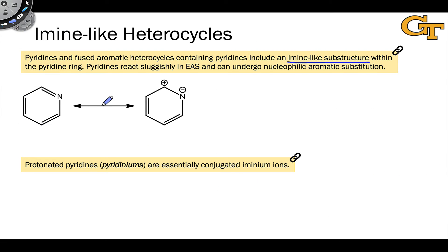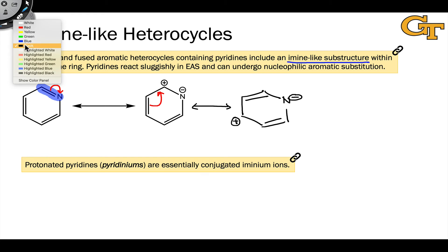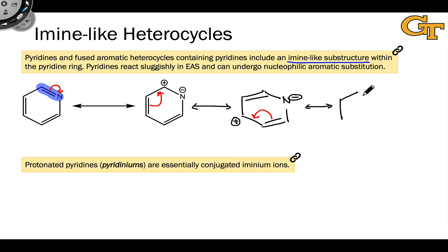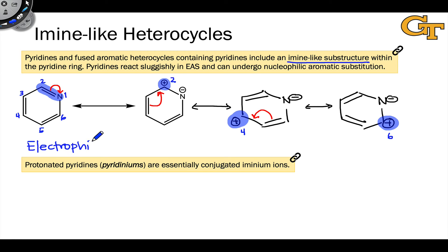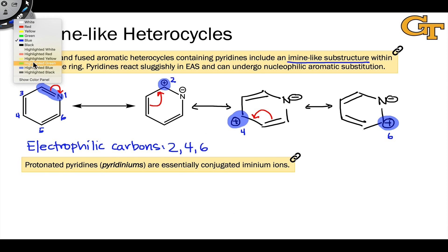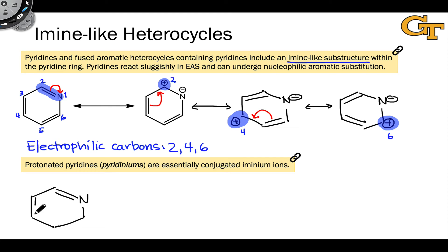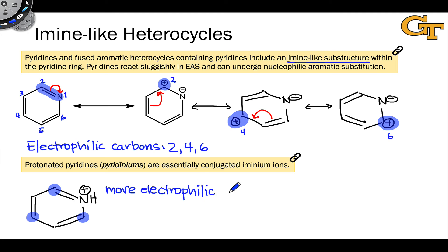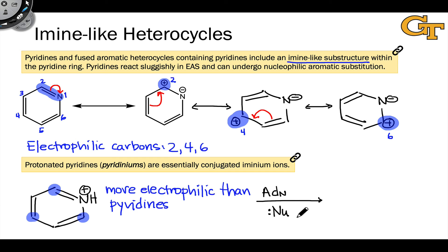There are also imine-like heterocycles, and pyridine is really the prototypical example. Pyridine contains a carbon-nitrogen double bond within its structure, and we can look at this as a kind of imine within the ring. Resonance structures show us that carbons within the pyridine ring are electron-deficient — there's positive charge on carbon two with respect to the nitrogen — and we can push electrons around the ring to show that carbons two, four, and six all bear positive charge. We can also think about protonating the pyridine nitrogen, which generates the conjugate acid, a pyridinium ion. These are essentially conjugated iminium ions in which carbons two, four, and six with respect to the pyridine nitrogen are strongly electrophilic, much more so than pyridine itself.